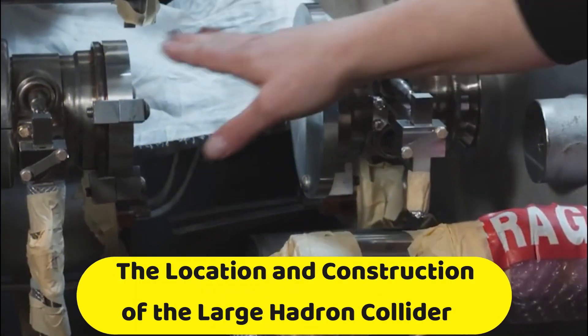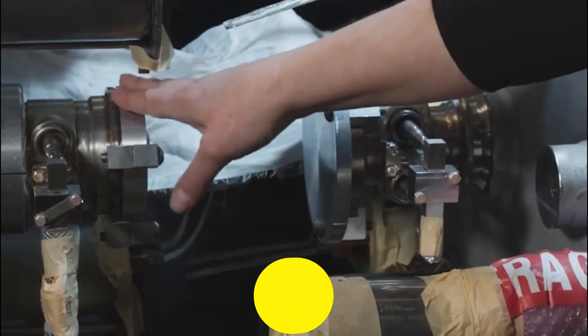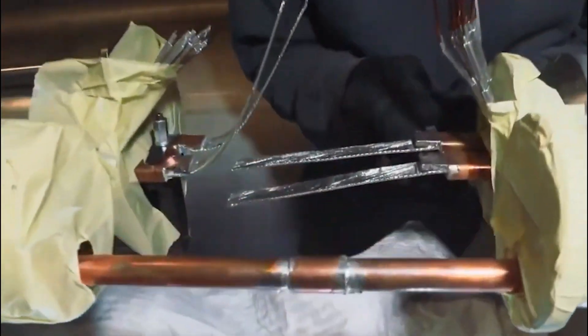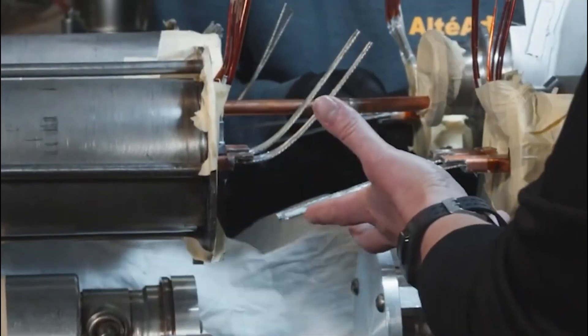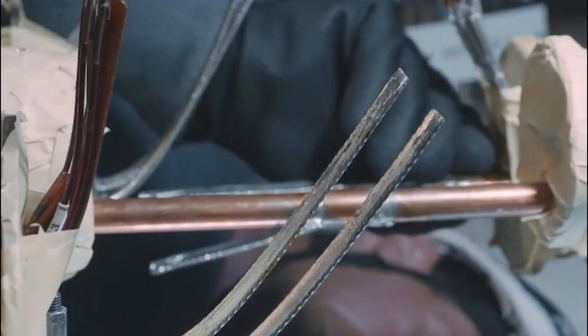The Location and Construction of the Large Hadron Collider. The Large Hadron Collider is a colossal feat of human engineering, located 100 meters below the surface, spanning the Swiss-French border.